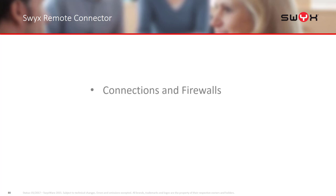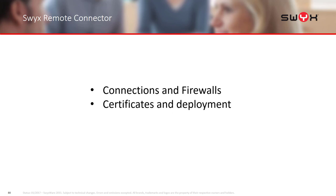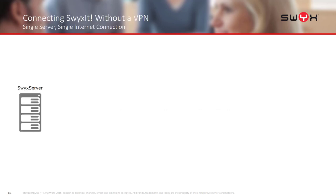In this presentation we're going to start off by going through how the Remote Connector connects and how we get through firewalls, then go on to how certificates are deployed to allow this to happen. We're going to talk about connecting SWIXIT without a VPN, starting with the majority of installs which is a single server with a single internet connection.